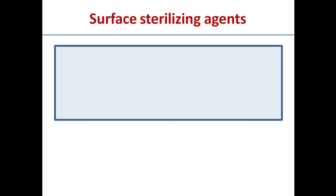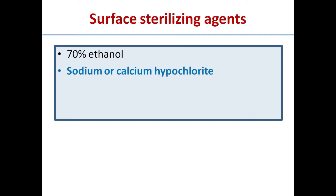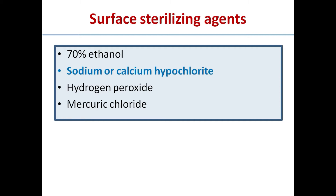We have a handful of surface sterilizing agents: ethanol at 70% concentration, sodium hypochlorite, calcium hypochlorite, hydrogen peroxide, and mercuric chloride. Out of these, sodium hypochlorite is the most widely used agent. However, for some rigorous surface sterilization steps, a combination of agents like ethanol and sodium hypochlorite are used.